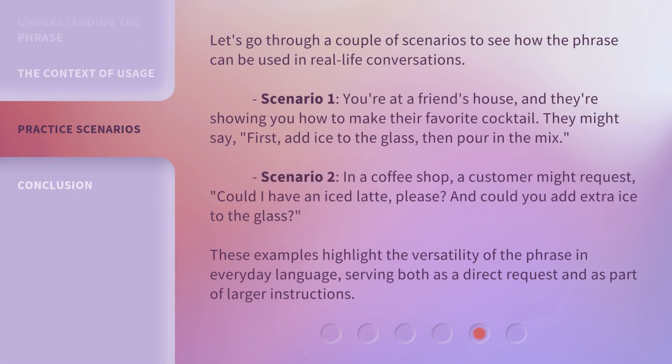Let's go through a couple of scenarios to see how the phrase can be used in real-life conversations. Scenario 1: you're at a friend's house, and they're showing you how to make their favorite cocktail. They might say, 'First, add ice to the glass, then pour in the mix.' Scenario 2: in a coffee shop, a customer might request, 'Could I have an iced latte, please? And could you add extra ice to the glass?' These examples highlight the versatility of the phrase in everyday language.